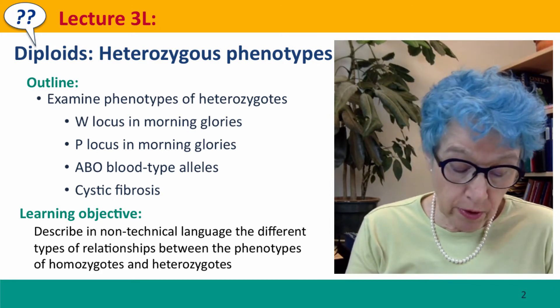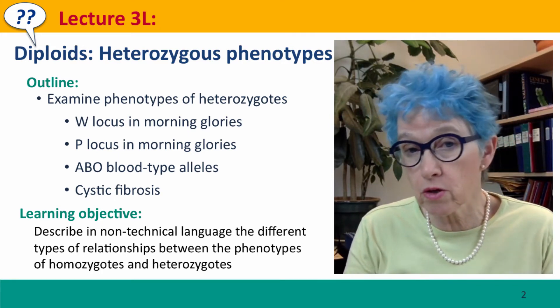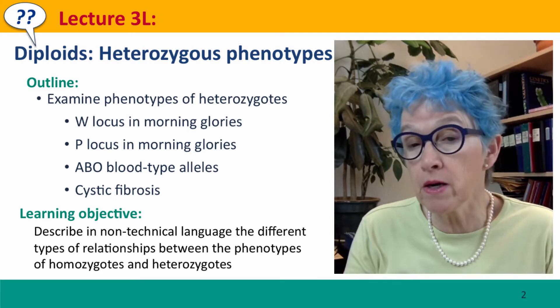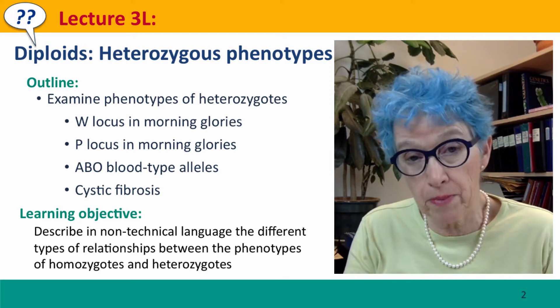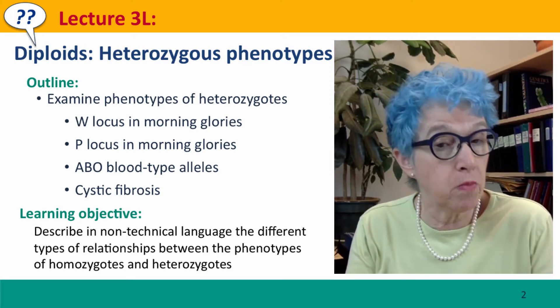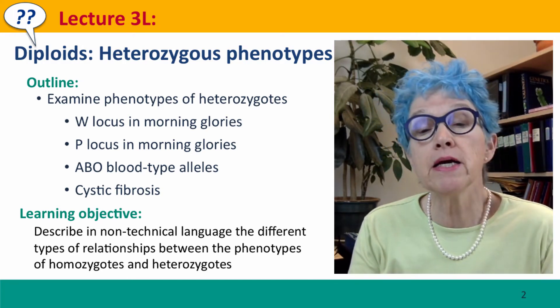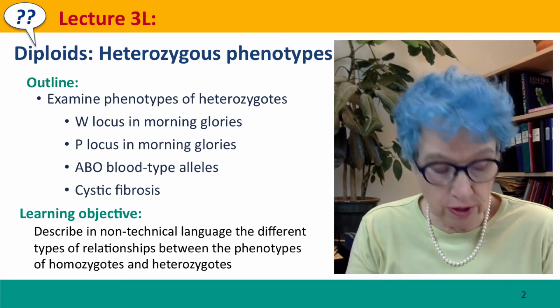Those four phenotypes are: the W locus causing white flowers in morning glories, the P locus causing pink flowers, the ABO blood type alleles, and cystic fibrosis.